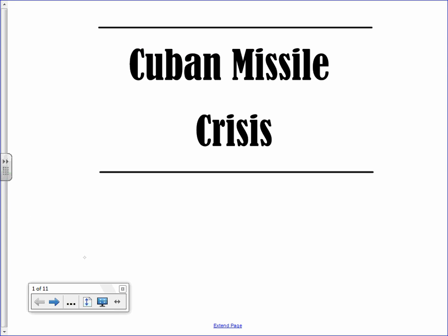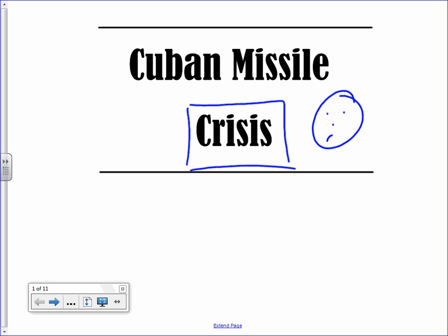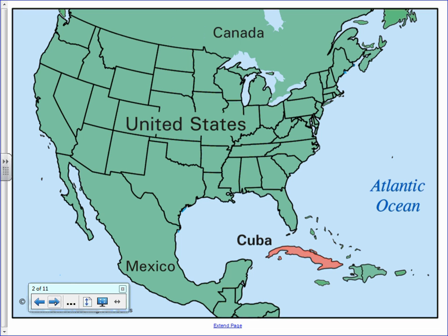One of the scariest events of the Cold War is the Cuban Missile Crisis. If you look at the name, there are a couple of things we can take from it. 'Crisis' means some kind of emergency, and we can also gather that it has something to do with Cuba, which it does.